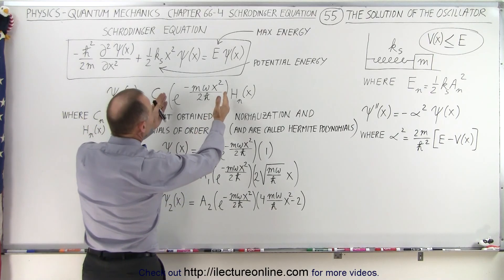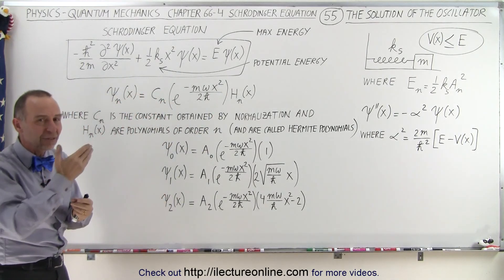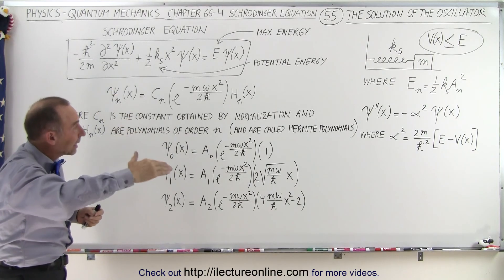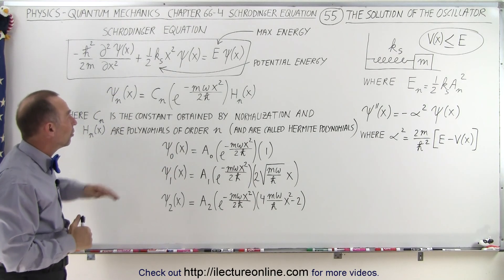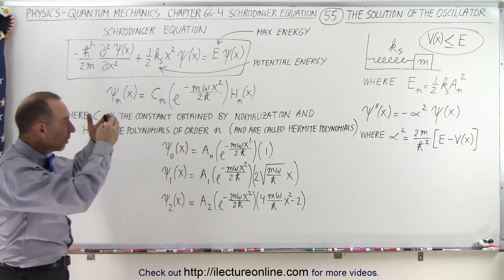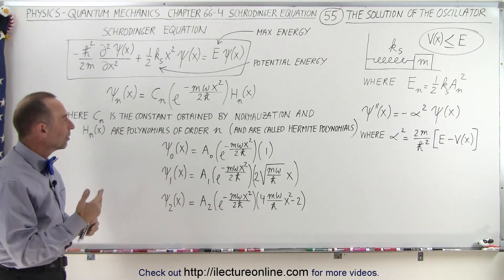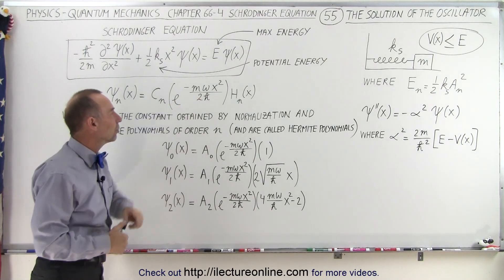Then we have an e to the minus x squared function. As x becomes large, that decays down to the x-axis, because e to the minus large number goes to zero. That allows us to zero in on a smooth function that comes down to the zero energy as x becomes large.